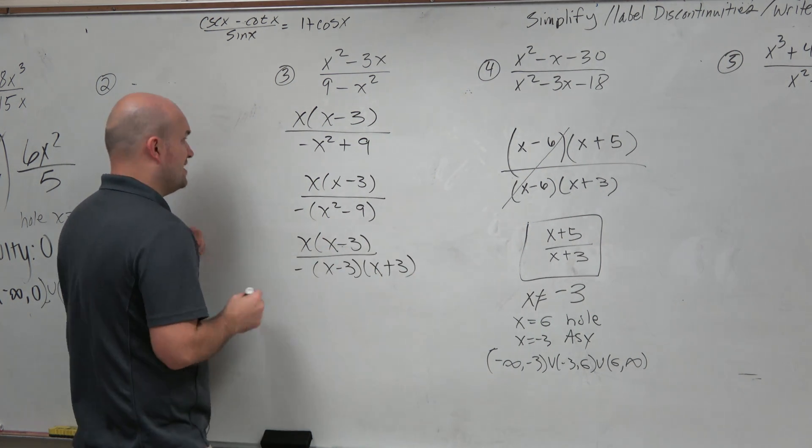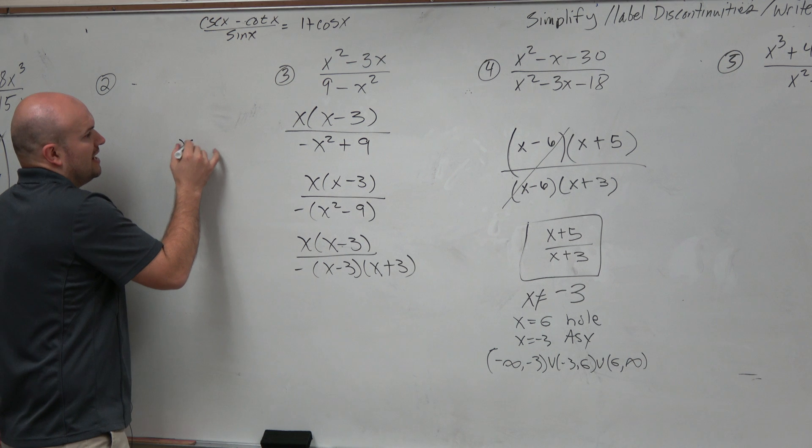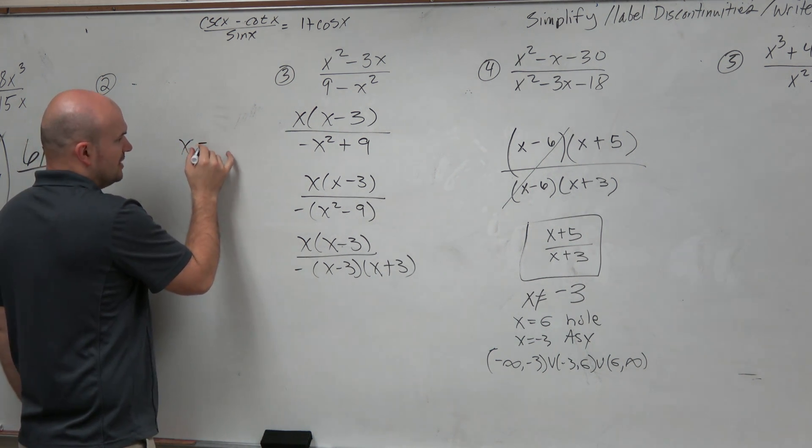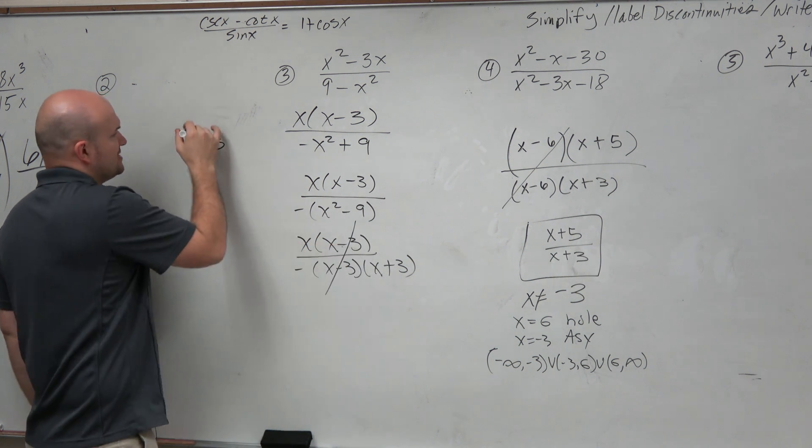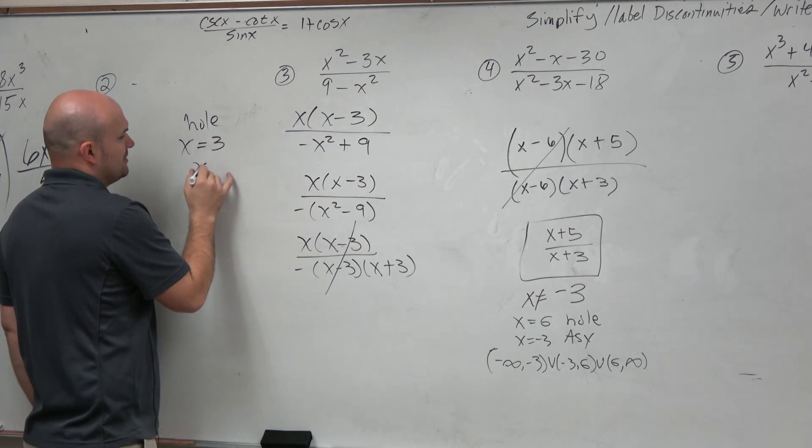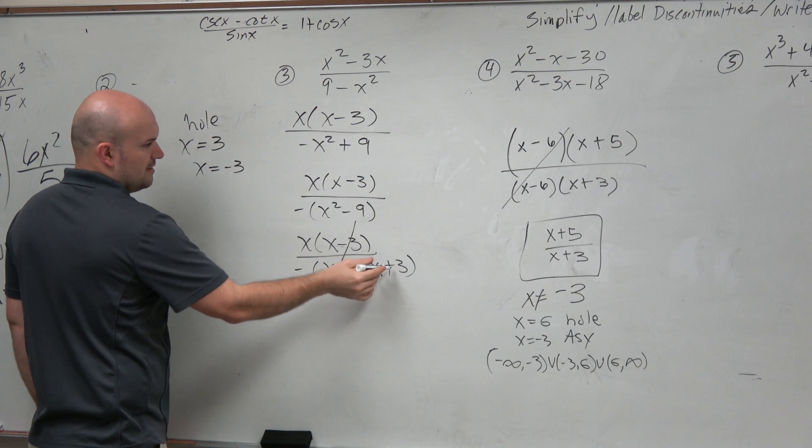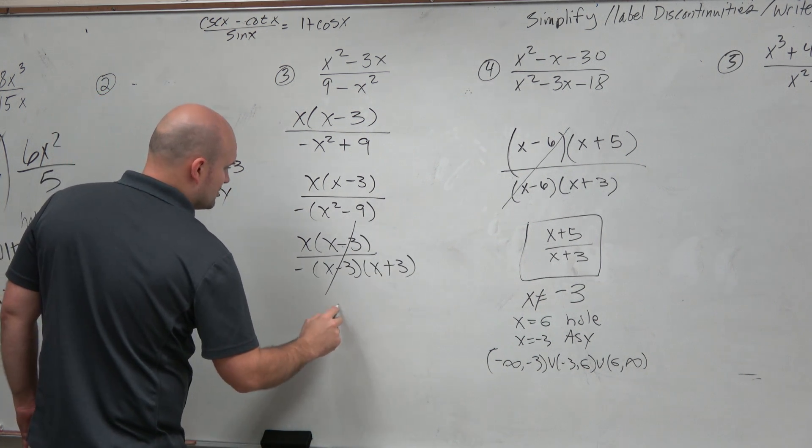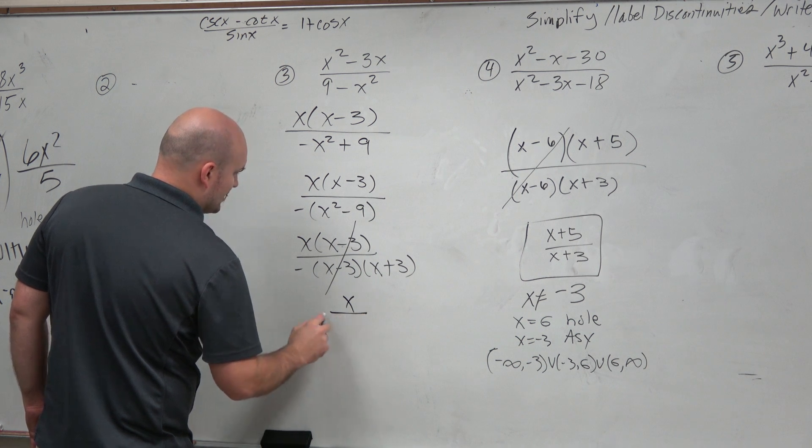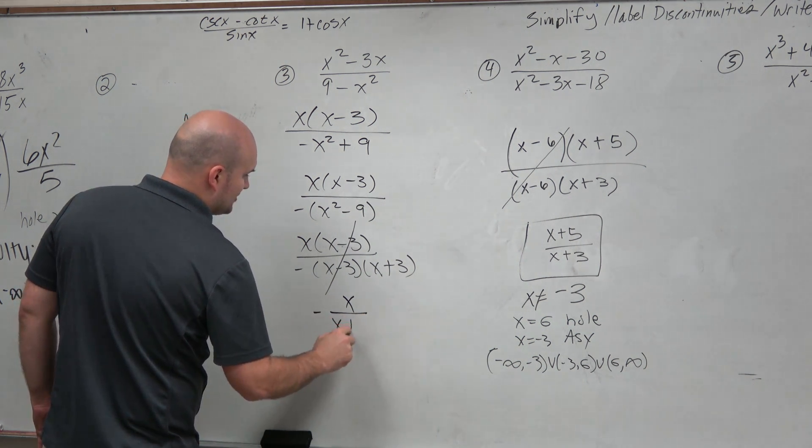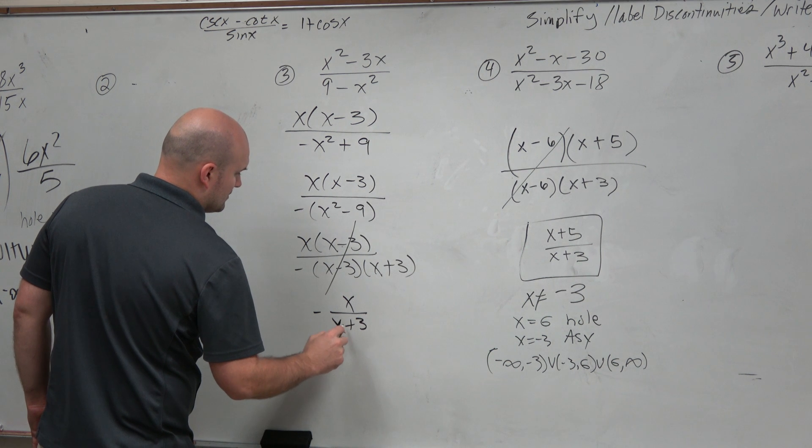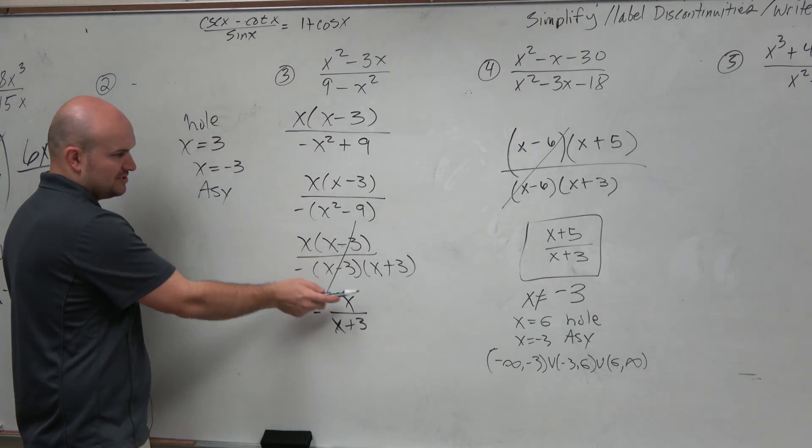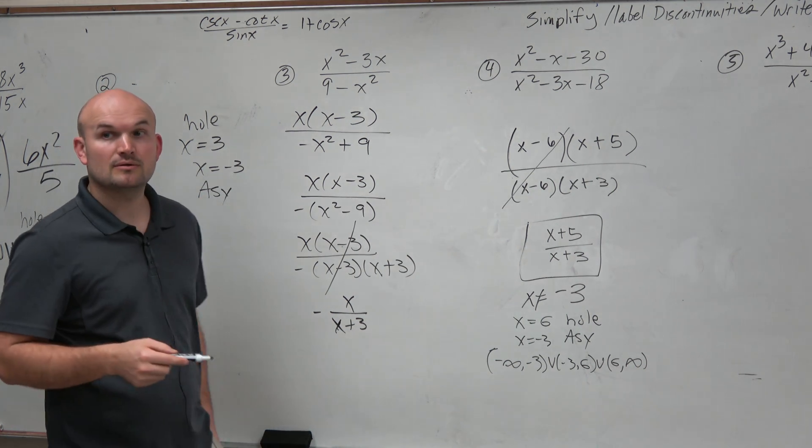Now I see that I have two discontinuities. When x equals 3, that is my hole. And when x equals negative 3, that is my asymptote. So my simplified answer is negative x over x plus 3. And since the x plus 3 stays, that's why my asymptote is at negative 3.